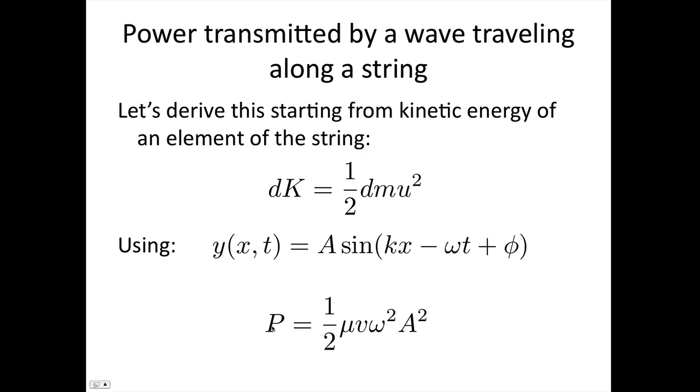We'll end up with power equals one-half mu v omega squared A squared, where mu is the linear density, v is the wave speed, omega is the angular frequency, and A is the amplitude. Let's derive this formula now.